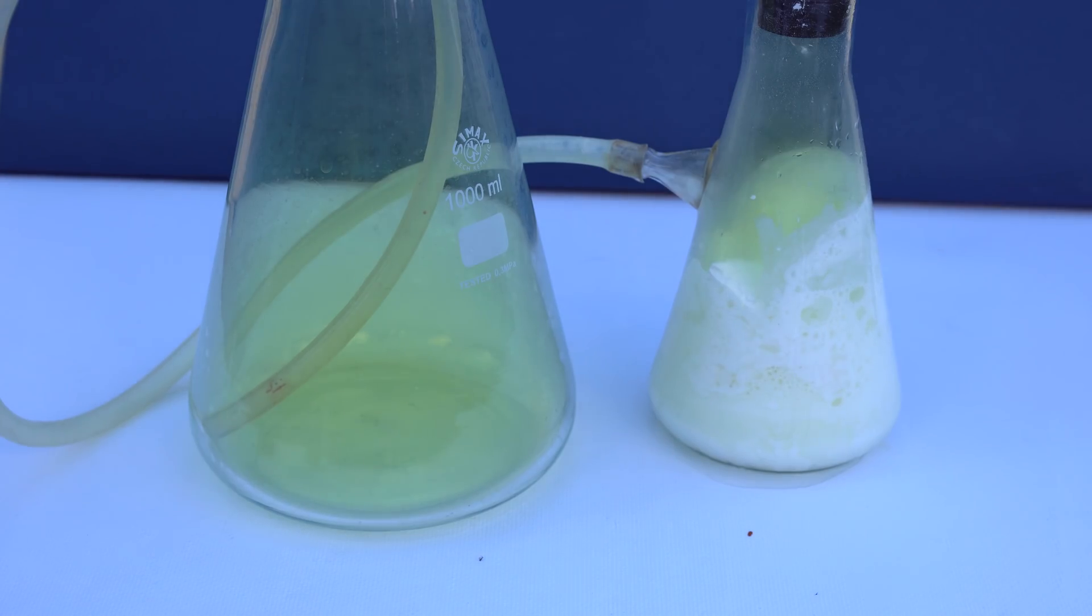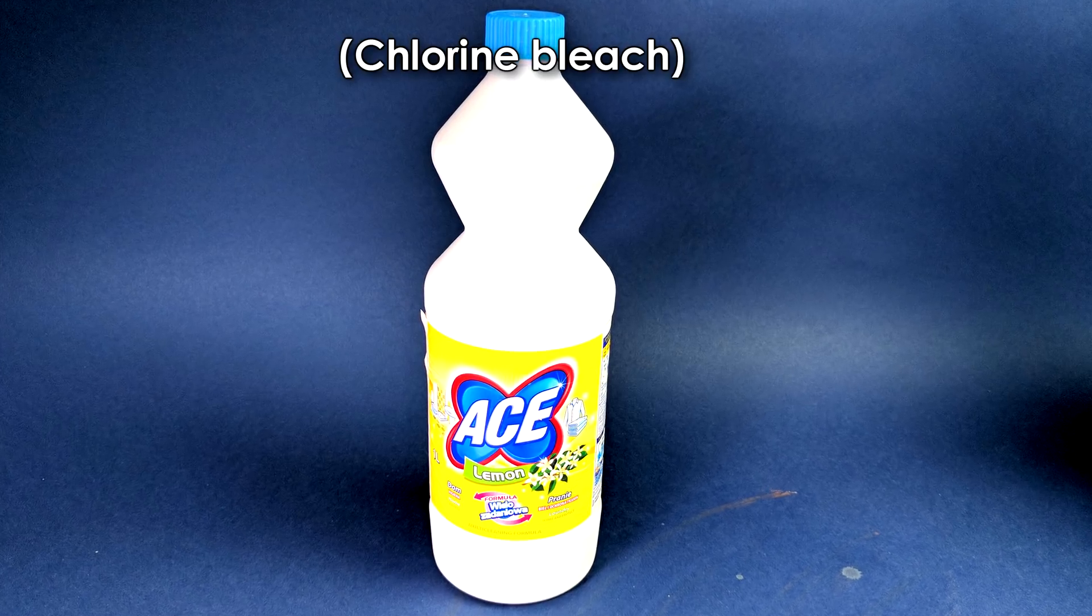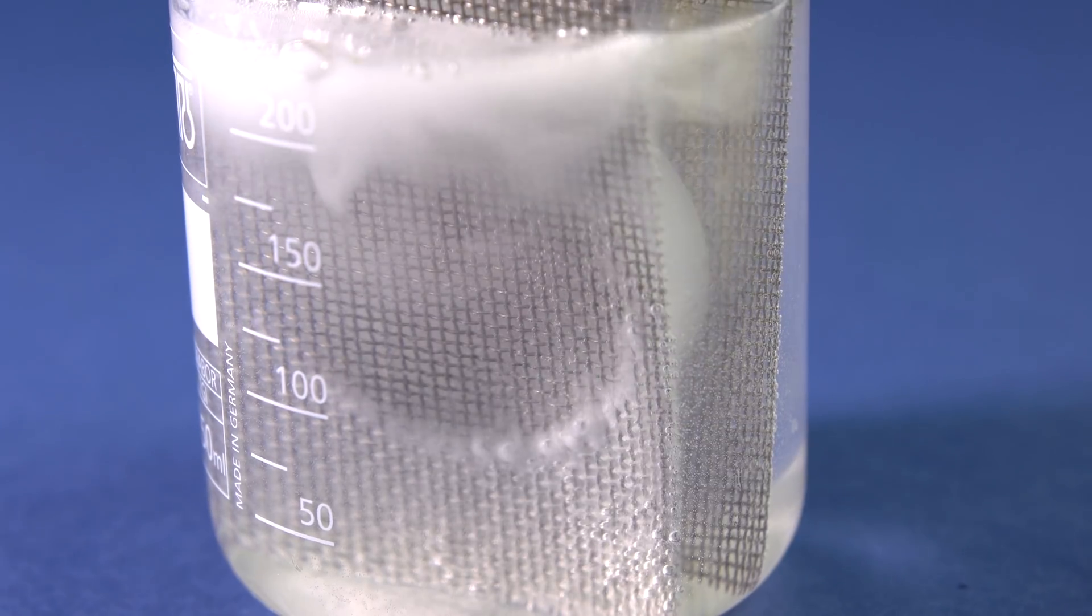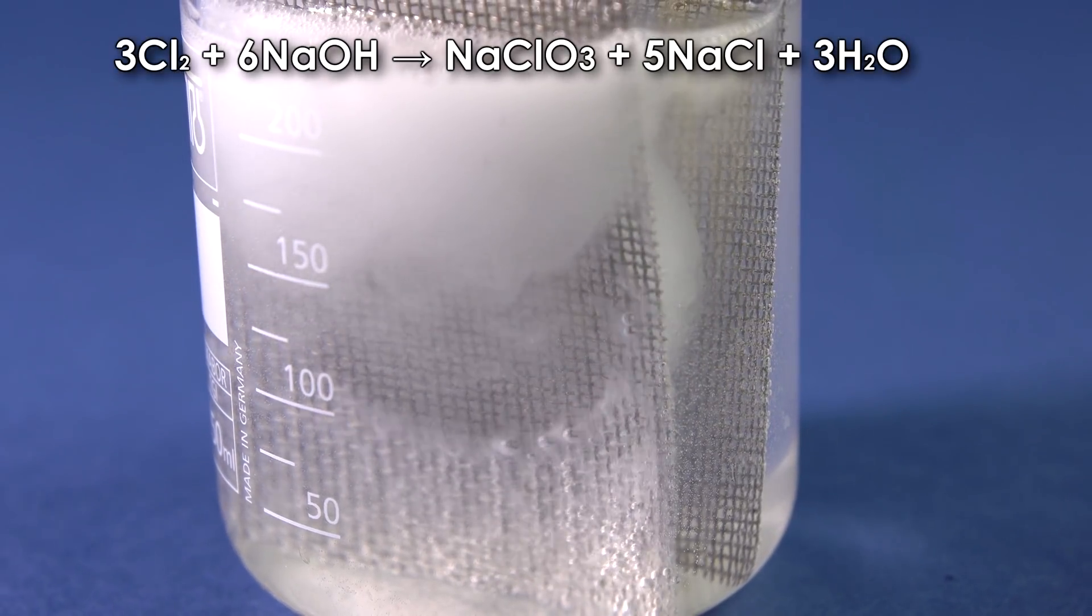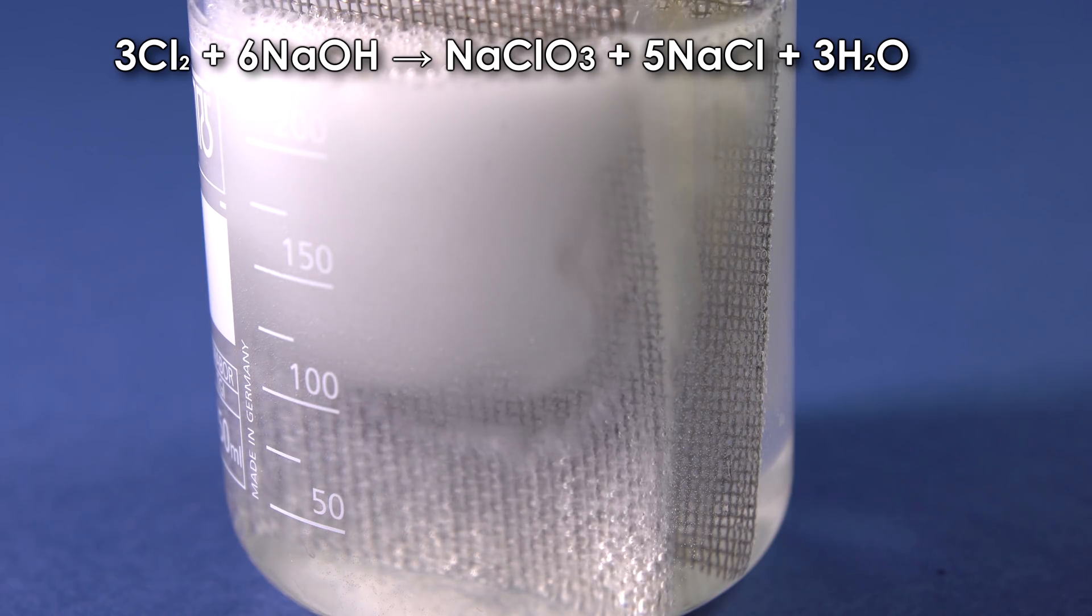However, pure chlorine is almost never used for bleaching because of its hazardness. For this purpose, sodium hypochlorite is produced by the electrolysis of a solution of table salt. The chlorine formed at an anode partially dissolves in alkaline environment, forming sodium hypochlorite and sodium chloride.